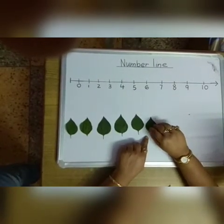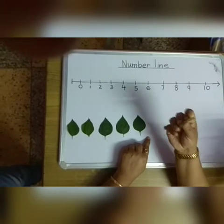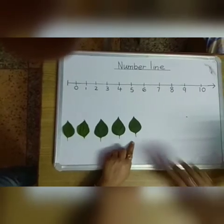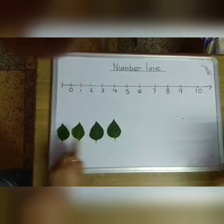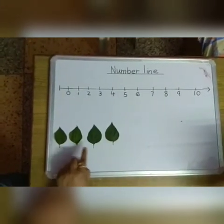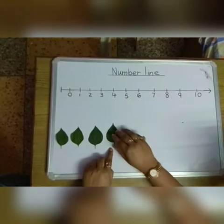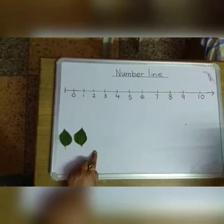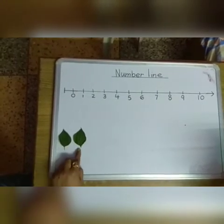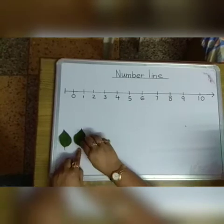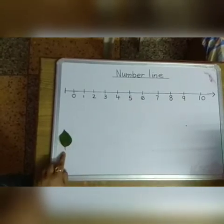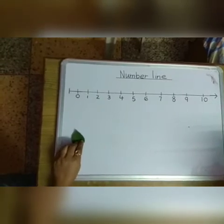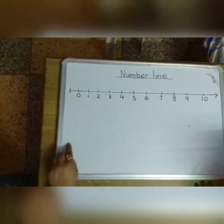Now we will remove one more leaf: 1, 2, 3, 4, 5. One more leaf. How many leaves? 1, 2, 3, 4. One more leaf: 1, 2, 3. One more leaf: 1, 2. Again, one more leaf. Now only one leaf — I will remove this last leaf. Now, 0.